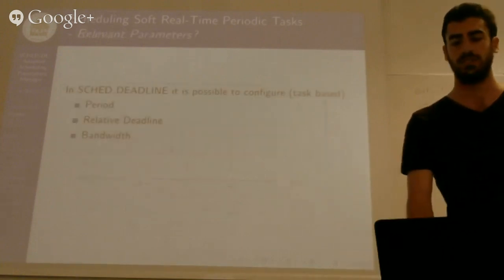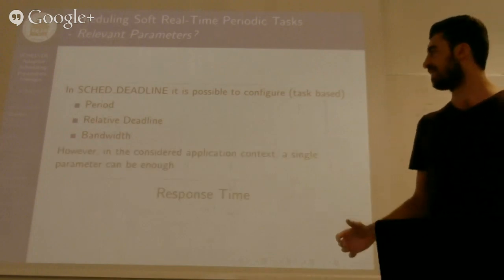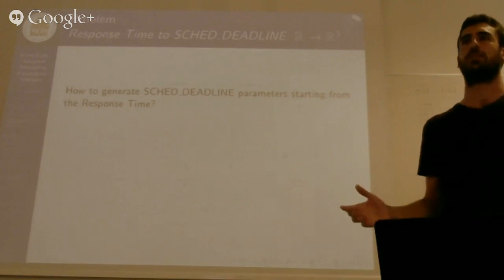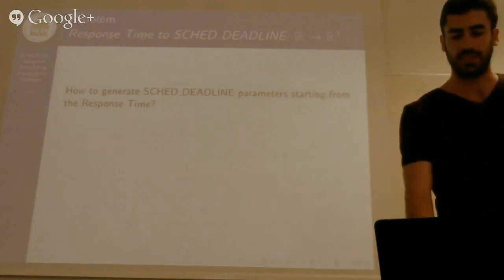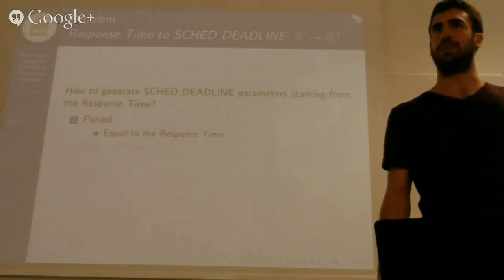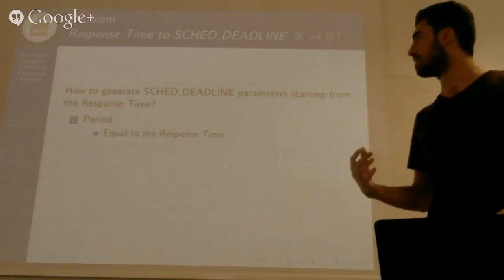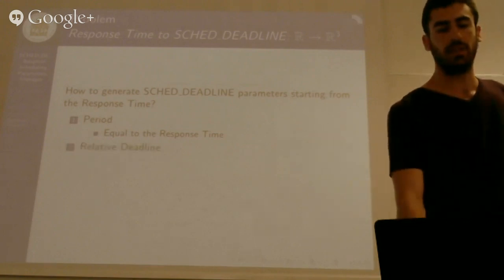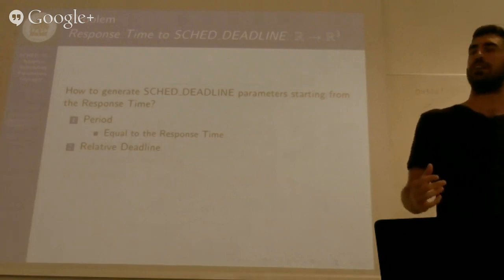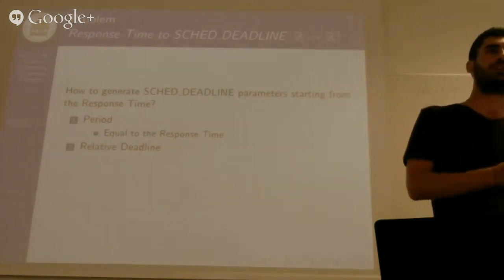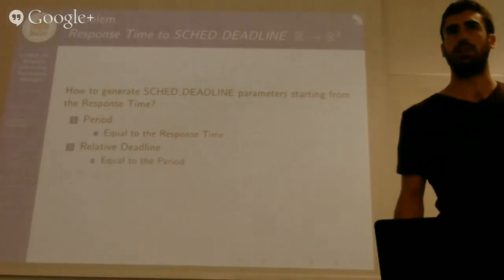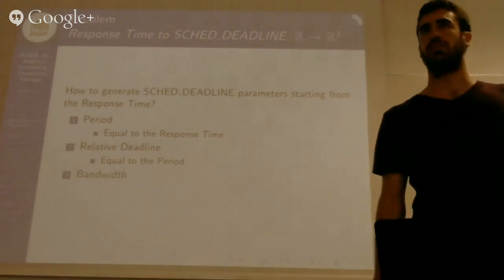So what the user wants is just the response time. So response time, of course, the user wants the frame to be produced at a certain time. And now the problem is how to pass from this response time to the SCHED_DEADLINE parameters. Let's start from the beginning. We have the period, of course, the period is just the response time. We have a fixed frame rate, which is constant. And so we can put the period equal to the response time. Now, for the relative deadline, the user wants the frame to be produced before the next time, but the user doesn't care if the frame is produced at the beginning of the time slot or at the ending of the time slot. So you just want to be produced in time. So it can be equal to the period. Now, the bandwidth. For the bandwidth, well, this is the real problem.